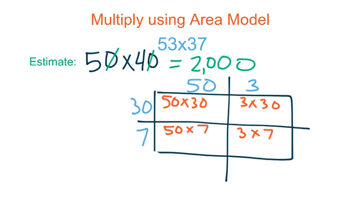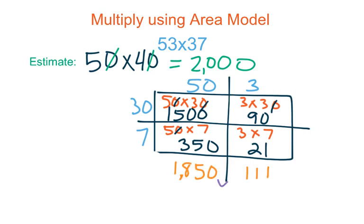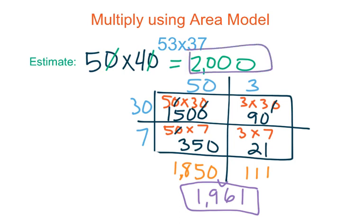Here's my area model. I'm going to multiply to find my partial products: I get 1,500, then a partial product of 90, then 350, and then 21. I'm going to add down to keep my addition simpler — adding two numbers at a time instead of four. Then I add 1,850 plus 111 and get a final product of 1,961, which is very close to my estimate of 2,000, so I can be pretty confident in that answer. Even so, it's always a good idea to check using a different method.